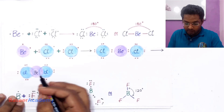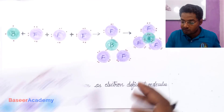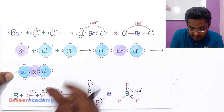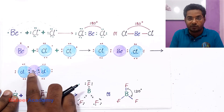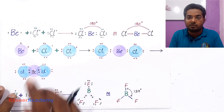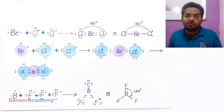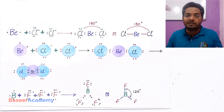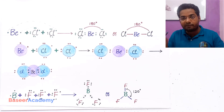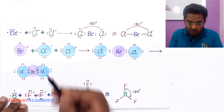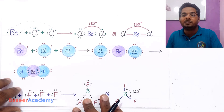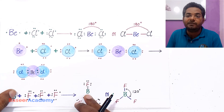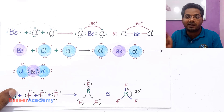Let us look closely at beryllium chloride and boron trifluoride. In beryllium chloride, beryllium has only four electrons after bonding, meaning it is not achieving the octet — it does not have eight electrons in its valence shell. Such molecules are known as electron deficient molecules, meaning they are lacking in electrons.